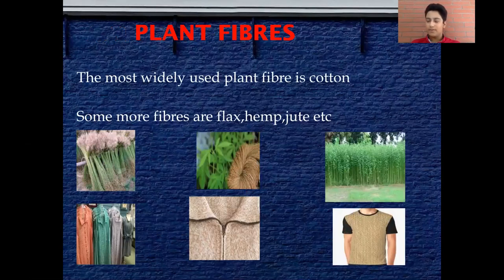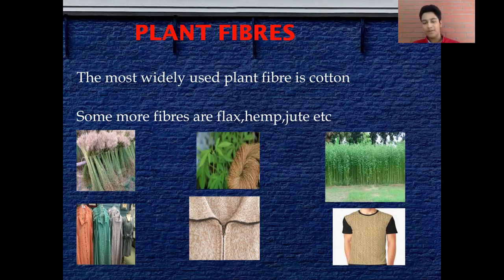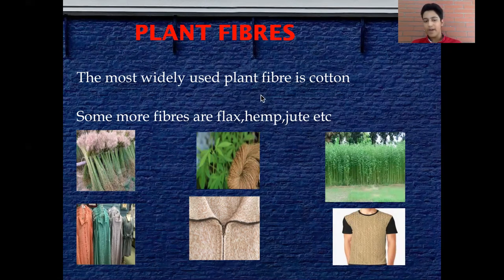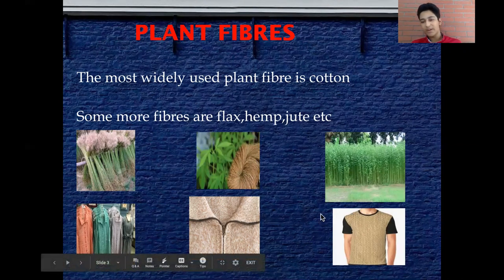There are two major types of natural fibers: plant fibers and animal fibers. The most widely loved plant fiber is cotton — we all know it, we all love to wear cotton clothes. Some more examples are flax, hemp, and jute, which can be turned into very beautiful clothes.